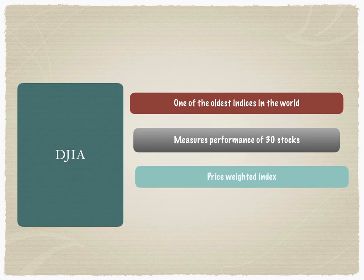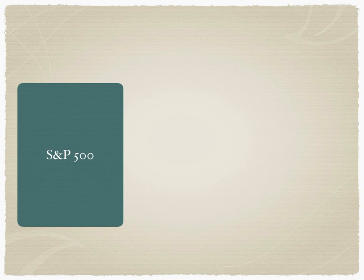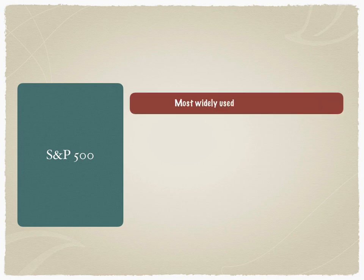The DJIA is a price-weighted index. A price-weighted index is one in which the higher the price, the greater the weightage. Whereas in India, the Nifty 50 is a volume-weighted index where greater the volume, greater the weight. S&P 500 is perhaps the most widely used benchmark in all equity pooled funds across the world.